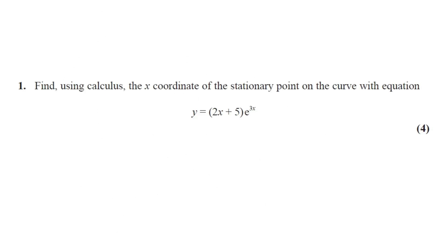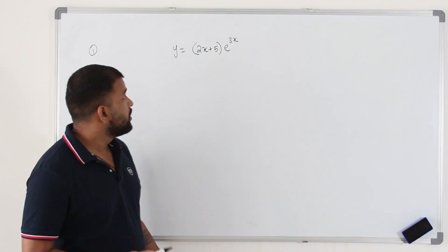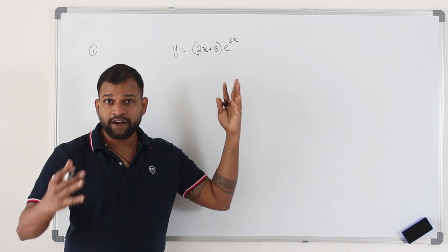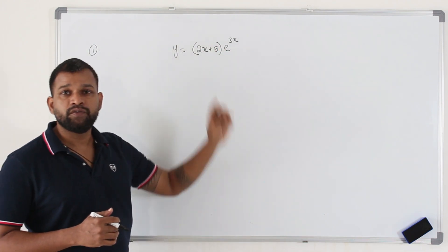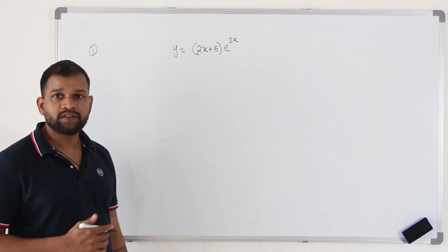Question number 1. Find using calculus the x-coordinate of the stationary point on the curve with the equation y equals (2x + 5)e^(3x). This question got four marks. Here we need to find the x-coordinate of the stationary point of this given function.